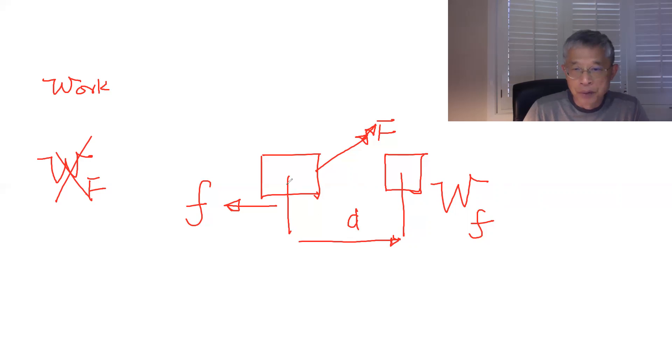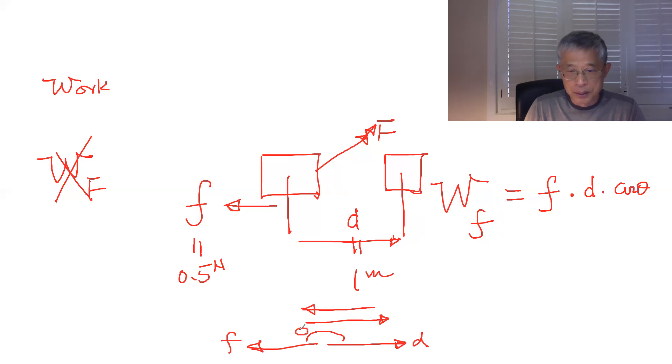So let's see if this is traveling one meter. And let's say this friction is equal to 0.5 Newton. Then you know, this is going to be F times the D times some kind of cosine theta. So what is the cosine theta here? Look at that. So D goes this way, but F goes that way. Okay. So you can also think of it as D goes this way and F goes this way. So that is your theta right there.